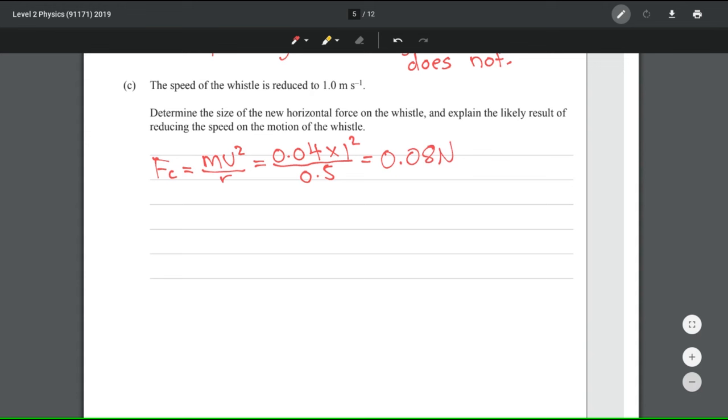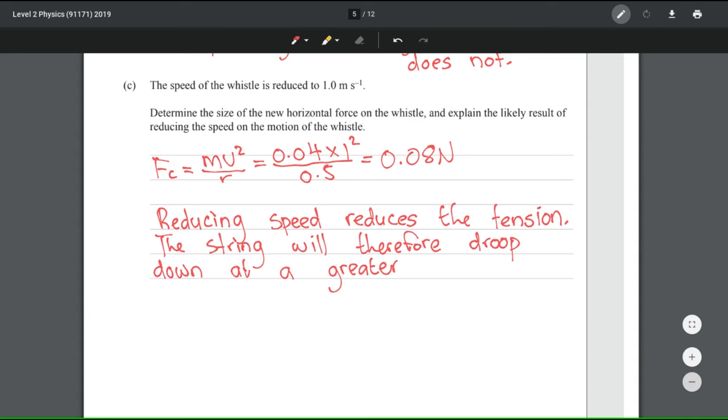And so looking at the explain part of this question, reducing the speed of the whistle therefore reduces the tension force and doing that means that we're going to have the whistle dropping down at a greater angle. Putting this into words, reducing speed reduces the tension, the string will therefore droop down at a greater angle effectively reducing the radius.